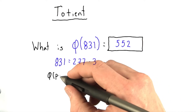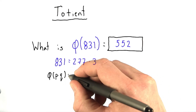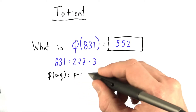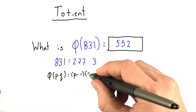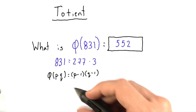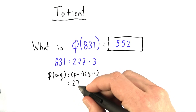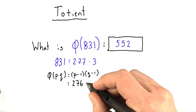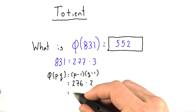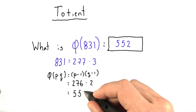We showed in lecture that the totient of p times q equals (p minus 1) times (q minus 1). And so the totient of 831 equals 276 times 2, which equals 552.